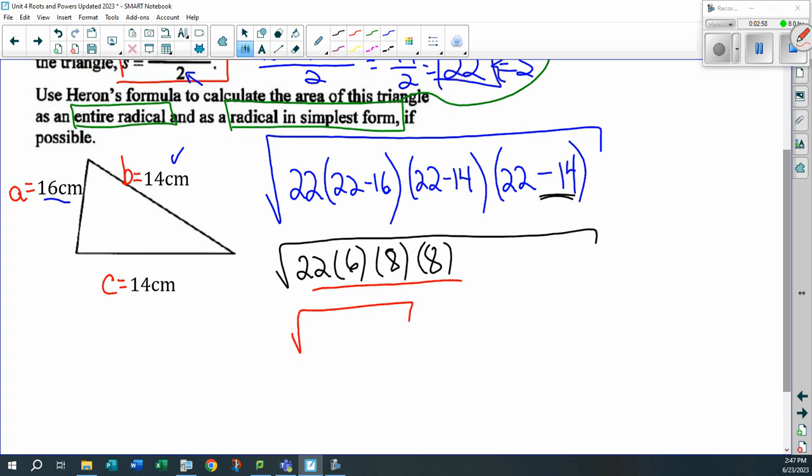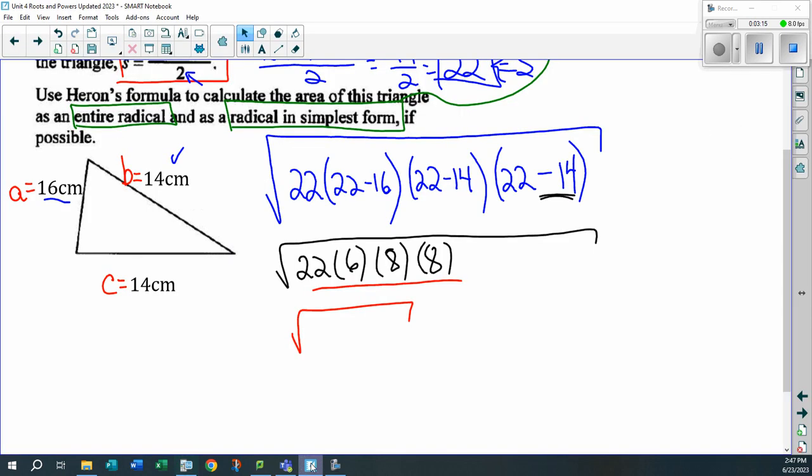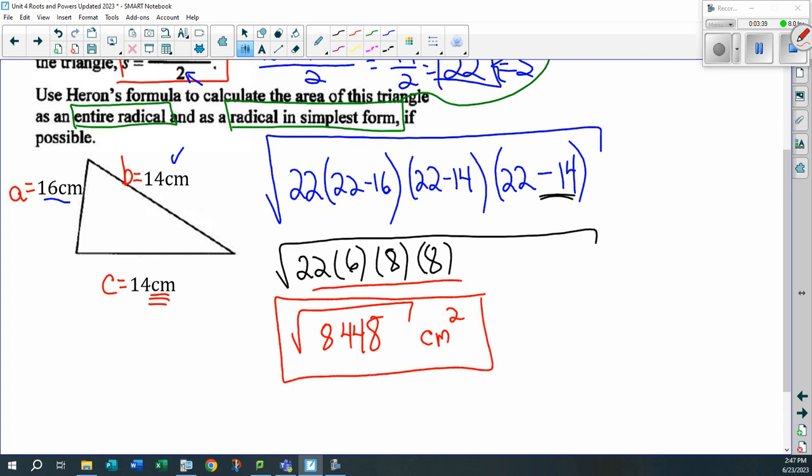Which just basically means multiply this whole puppy together. Oh, my goodness. So, we've got 22 times 6 times 8 times 8. Look at that number, 8,448. Let's go put it back in here, 8,448. That would be the entire area of that triangle in radical form. Almost. Remember, this is area, and I gave you a unit. Watch out. Area units are squared. That's the right answer. Don't get burnt. You did so much work just to get down to there and not put the units down.